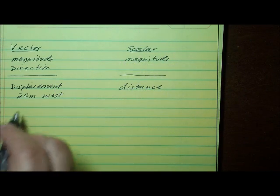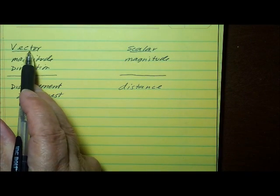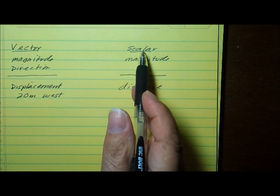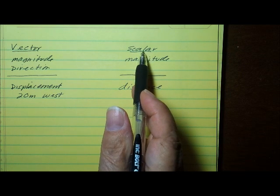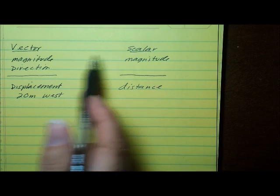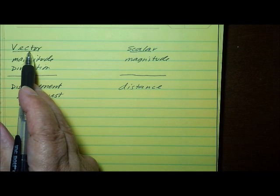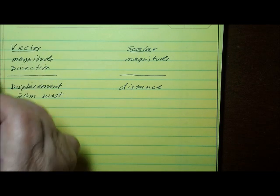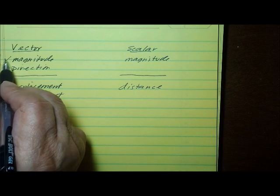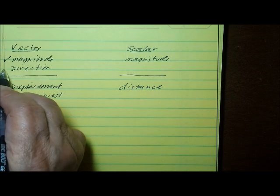We're going to spend just a couple of minutes talking about the difference between vector measurements and scalar measurements. Very basically put, the difference between a vector and a scalar is that vector measurements always have both a magnitude, that means a quantity or an amount, and a direction.